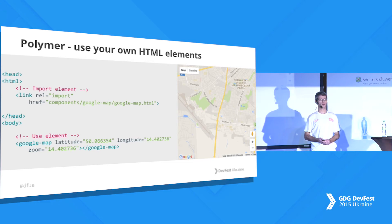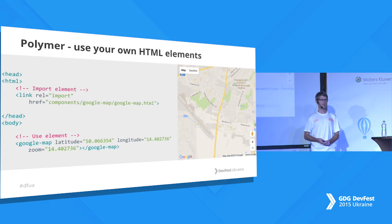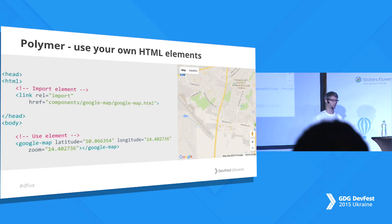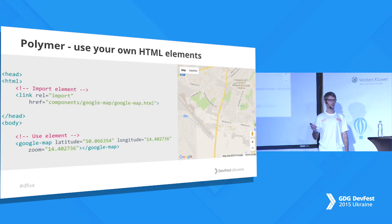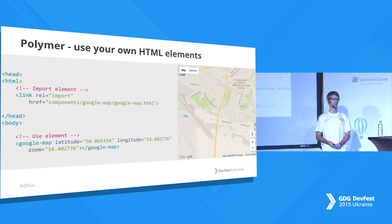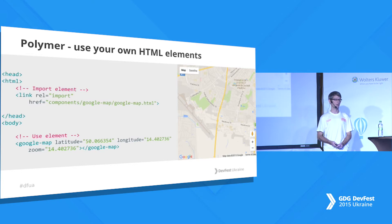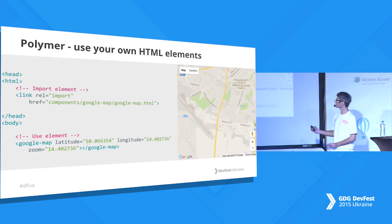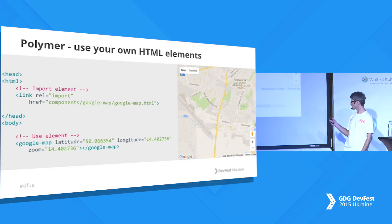You have probably seen the DevFest application — it's built with Polymer. You can use it for web applications. Here is an example of using the Google Map element. You can see it's really easy to import your own HTML elements: there is a link tag, and you render the elements just like using any other element like a video tag or input. You can set latitude, longitude, and zoom level, and on the right side you can see how it looks — this is the place we are now.